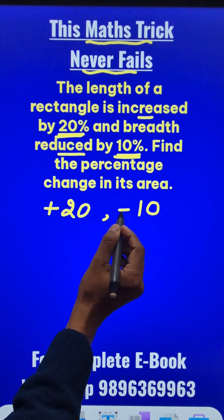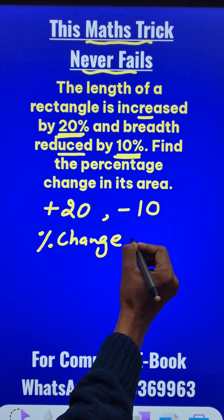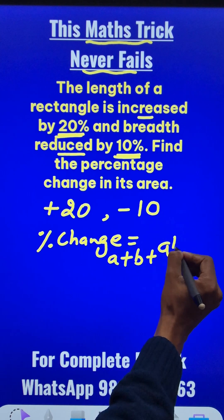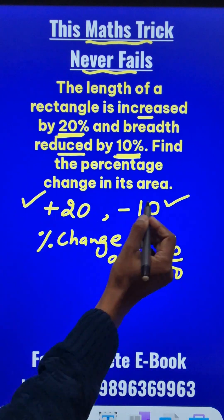Now remember the sign. To find the percentage change in the area, we can use the direct formula a plus b plus ab upon 100. Now what is a and b? a and b are the two values which we have written here.